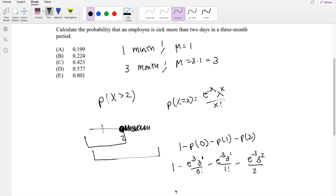If I was doing this on the exam, I would factor out e^-3 and just do 1 plus 3 plus 9 over 2.